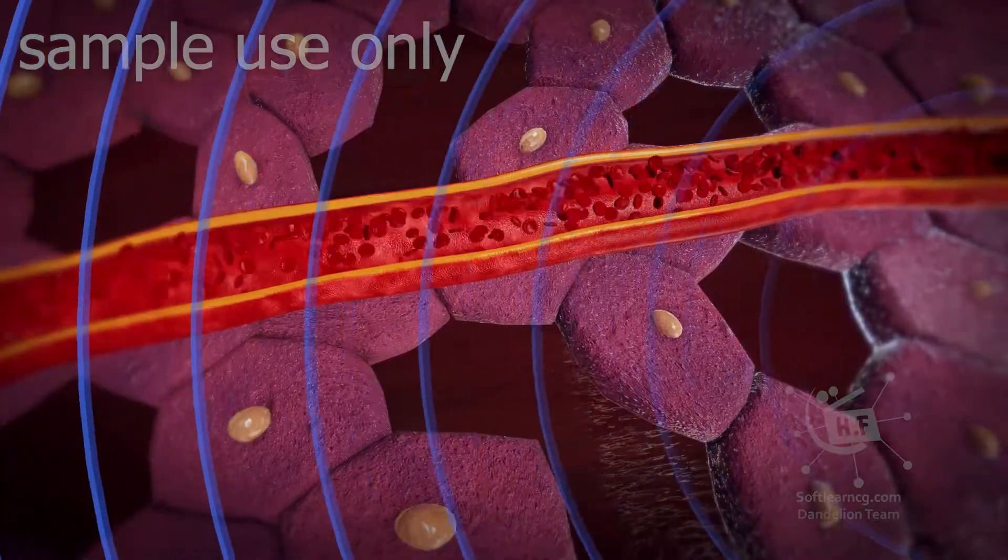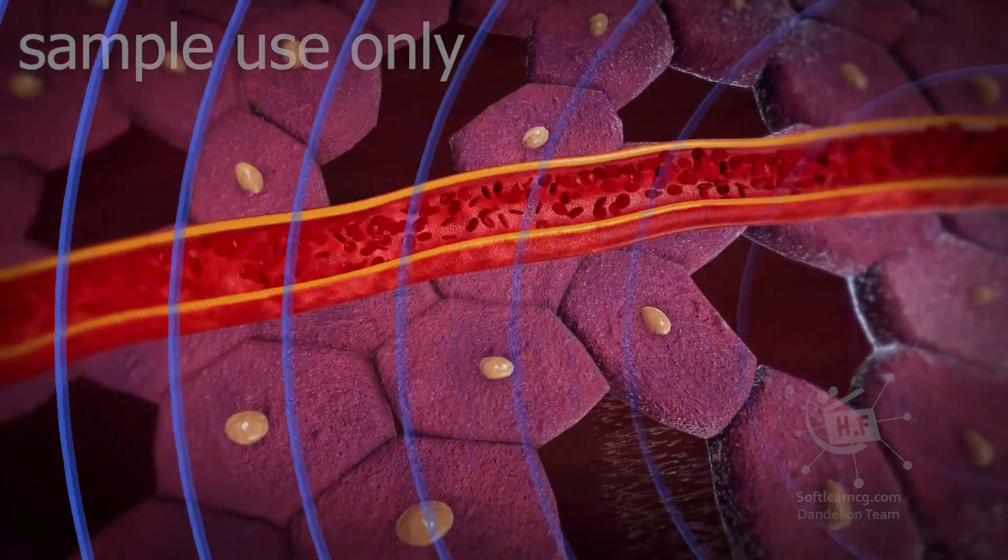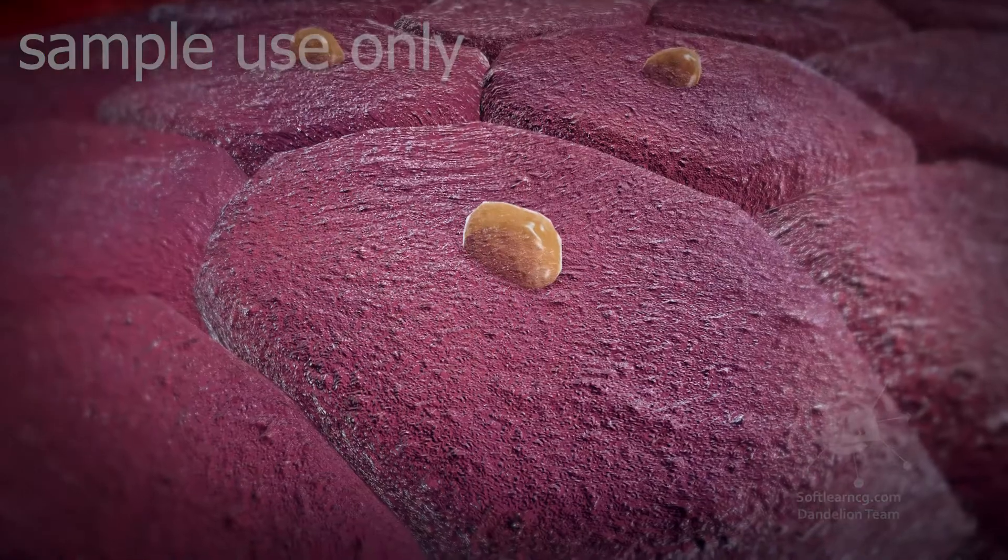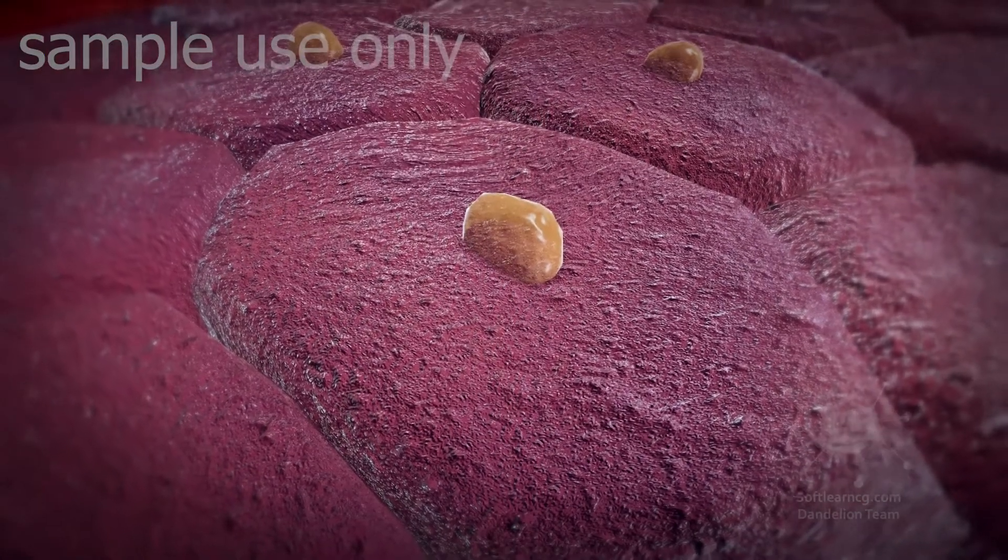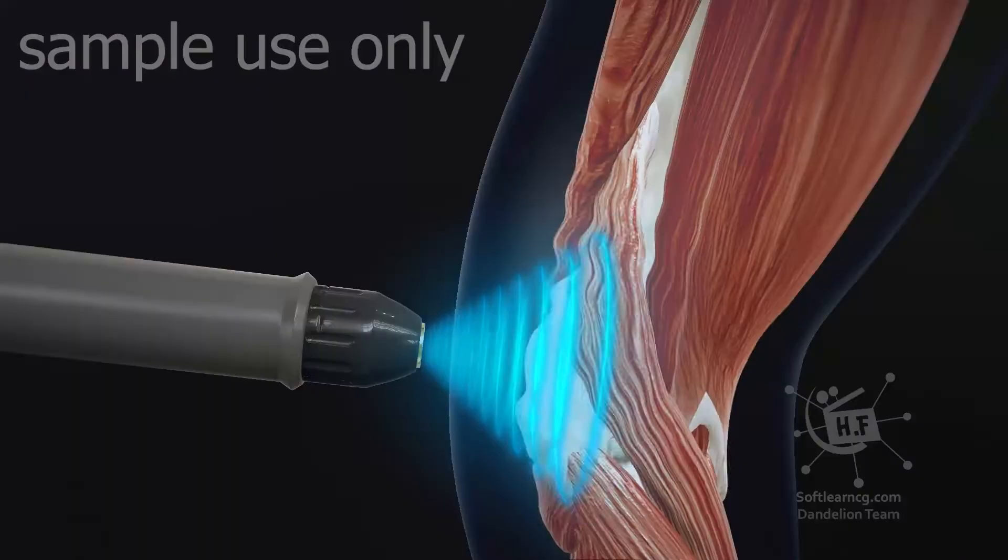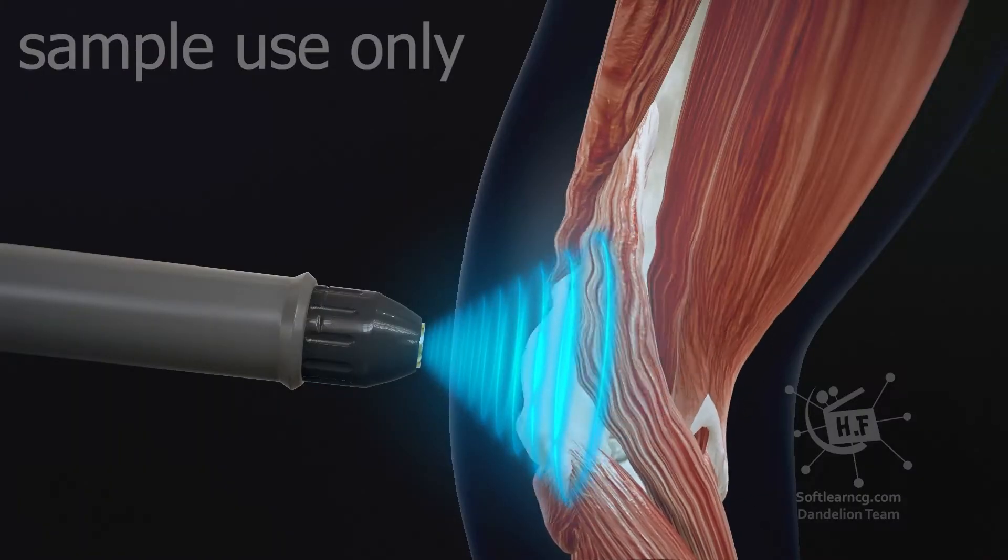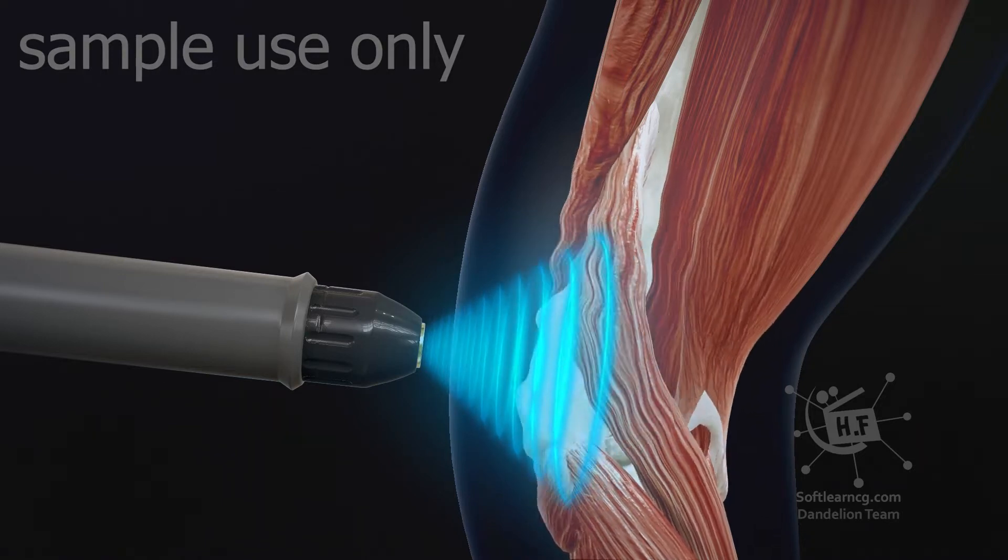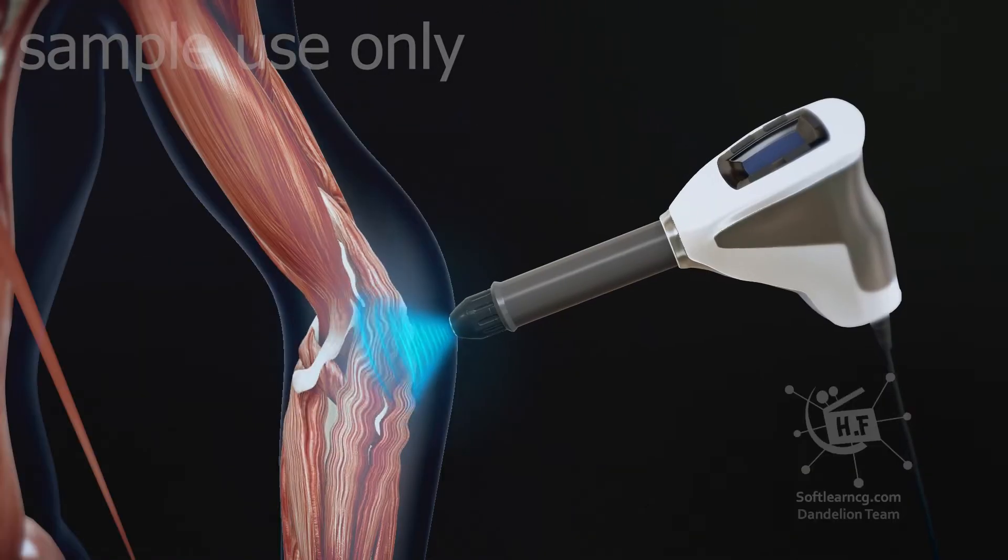...an analgesic effect by intense local stimulation, releasing enzymes that act on pain. A mechanical action forms micro bubbles that fragment local fibrosis. Shockwaves can be used to treat joint pains such as tendonitis and epicondylitis on shoulders, elbows, and...